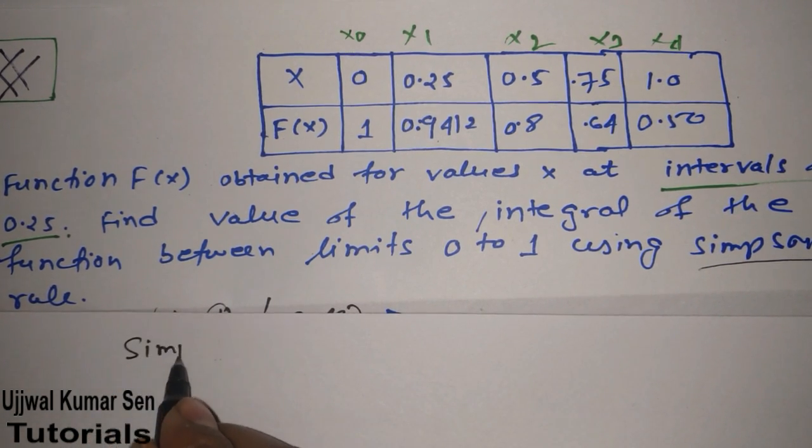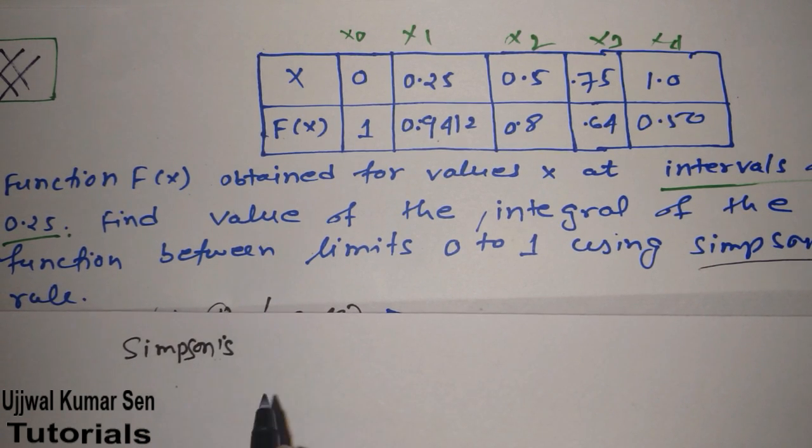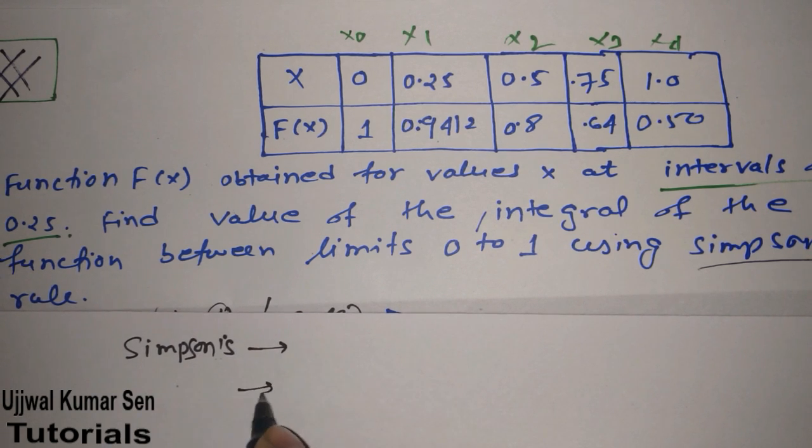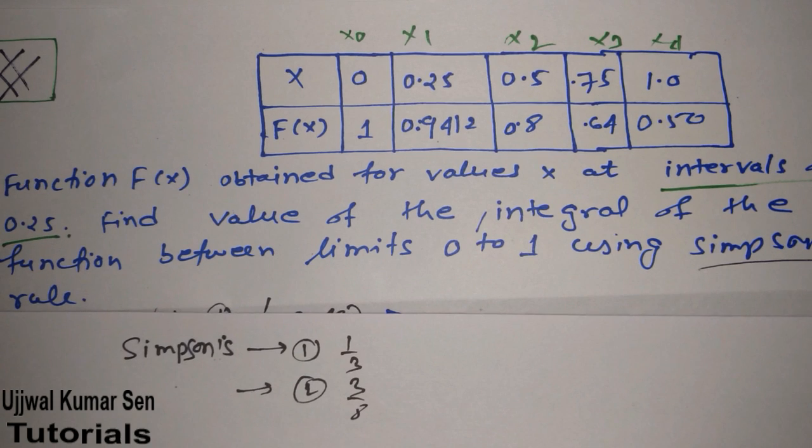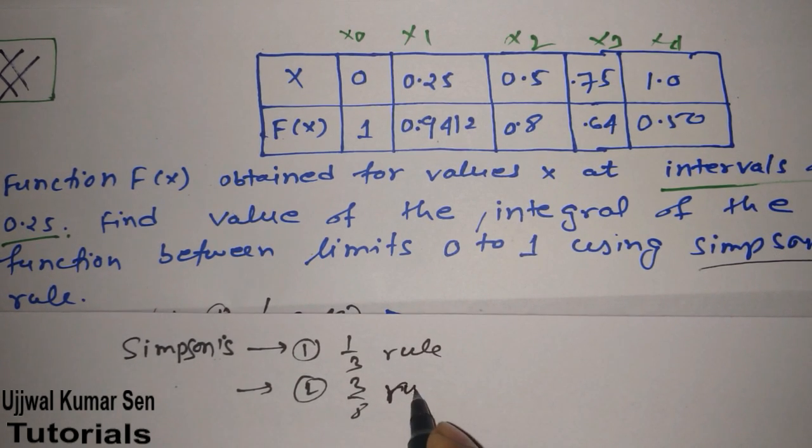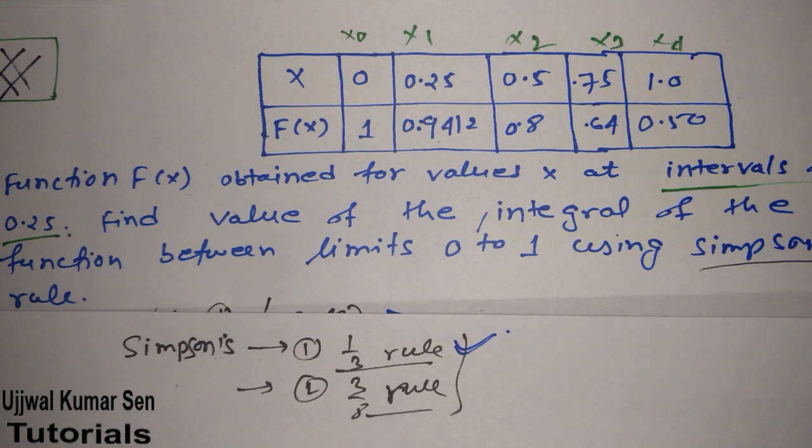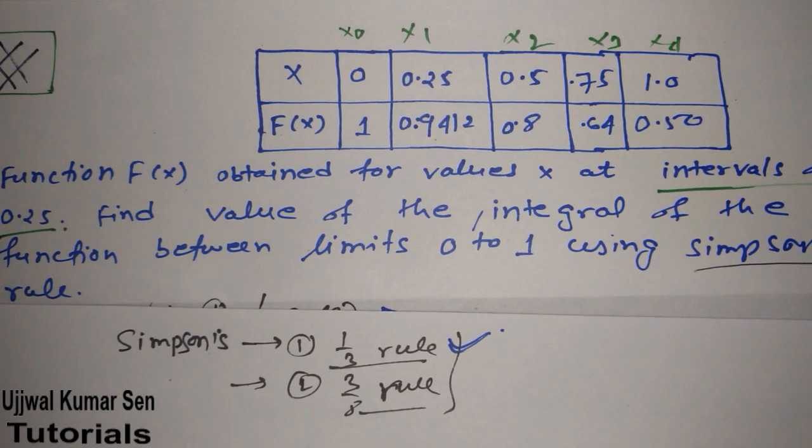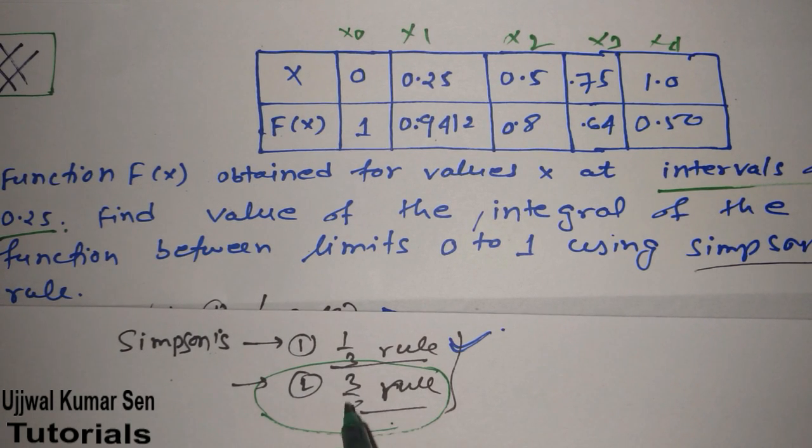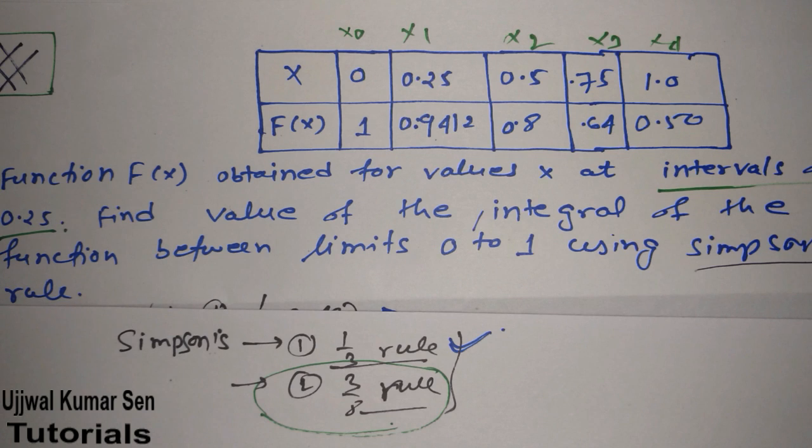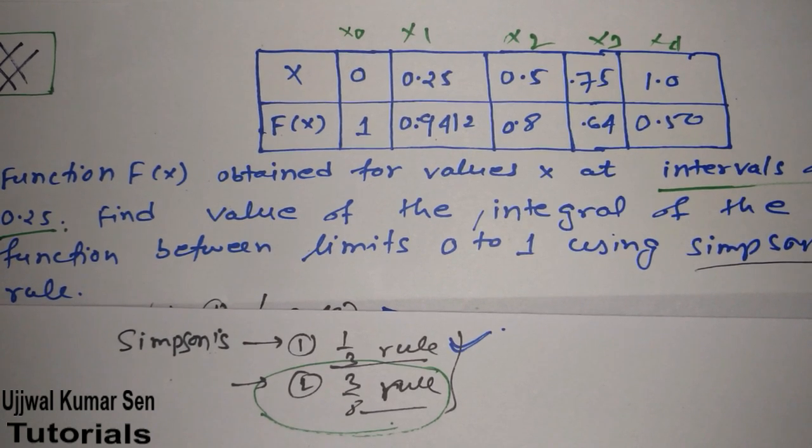Basically, in case of Simpson's rule, we have two methods: method one and method two, that is one-third and three by eight rules. You know these two methods, but here we are going to use the one by three method. Let me share with you one fact: we usually make mistakes here. In case of the three by eight rule, we are unable to figure this out, that's why we say eight by three rule. Most of the time many get confused. I have seen many because I was confused when I started studying numerical methods.